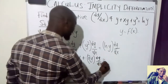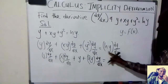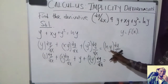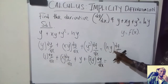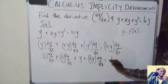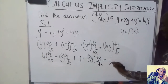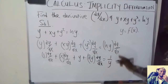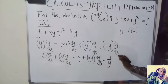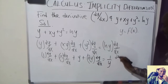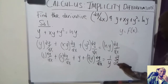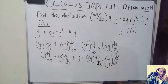Then for the ln(y) term, the differentiation of ln(y) is equal to 1 over y. But again, I differentiated with respect to y, so I have to attach dy over dx.